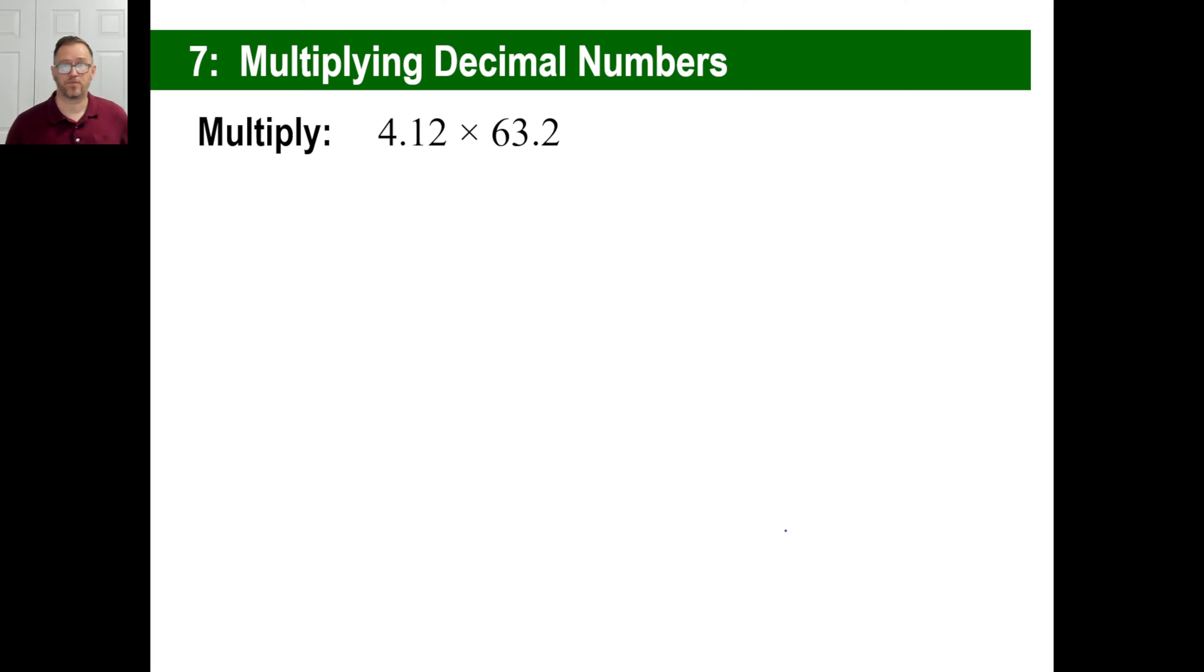All right. So let's multiply. First off, real quick, give me a guess about how much this is. About how much is this answer? It's like 4 times 60, right? 4 times 6 is 24. 4 times 60 is 240. There's a little more than 60 and a little more than 4. So it's probably around like 250, right?